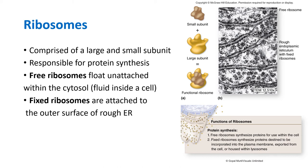All cells, whether they are prokaryotes or eukaryotes, do have ribosomes. Ribosomes are responsible for making proteins. In eukaryotic organisms, those ribosomes can be found either on the surface of the nucleus — on the nuclear envelope — or attached to the rough endoplasmic reticulum. In prokaryotes, ribosomes are usually found in the cytosol, which is the fluid inside of the cell.